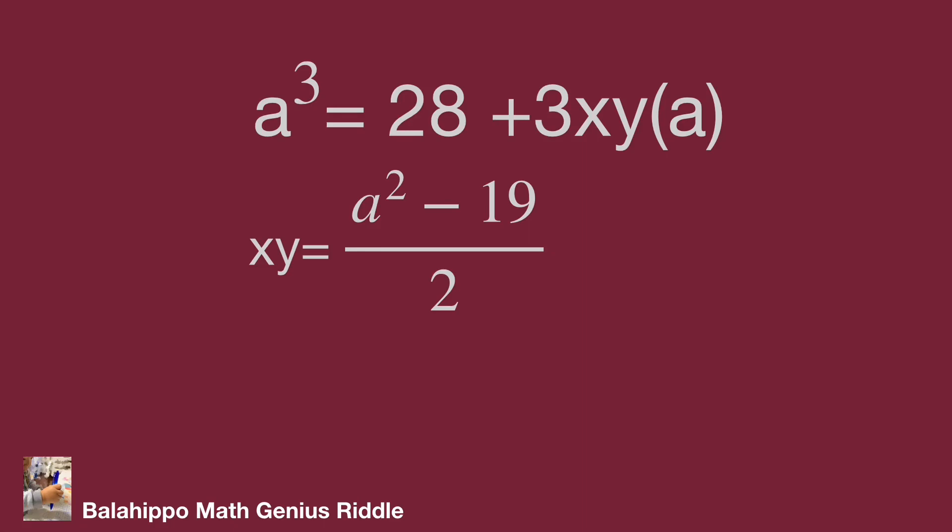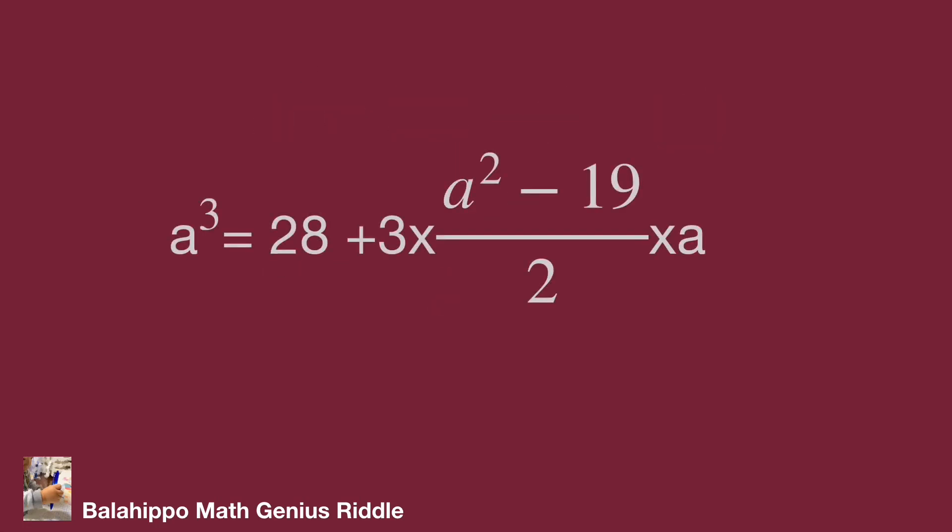Substitution x plus y squared by a squared equals x squared plus y squared minus 19 to the first equation, as a cubed equals 28 plus 3 times a squared minus 19 over 2 times a.